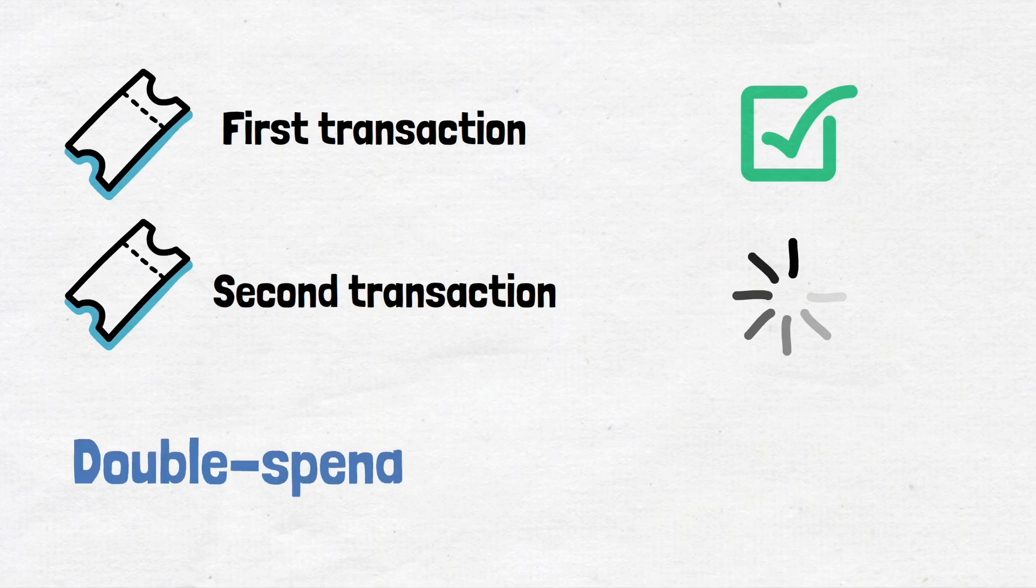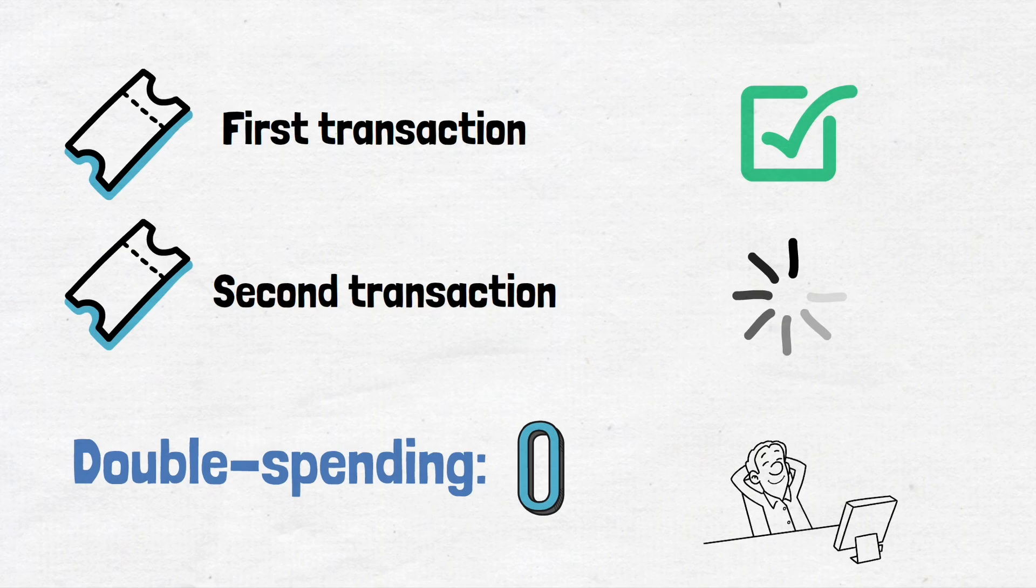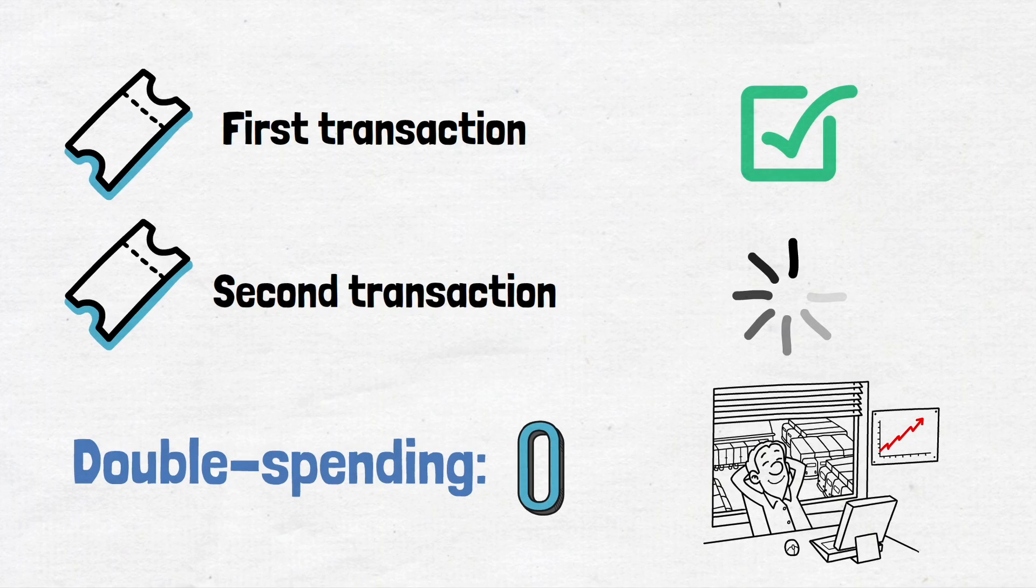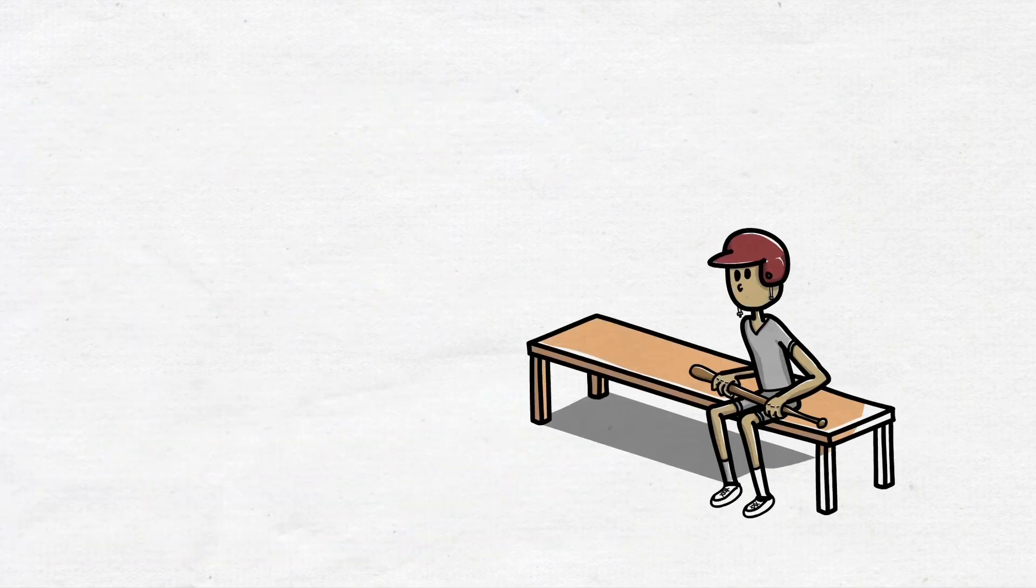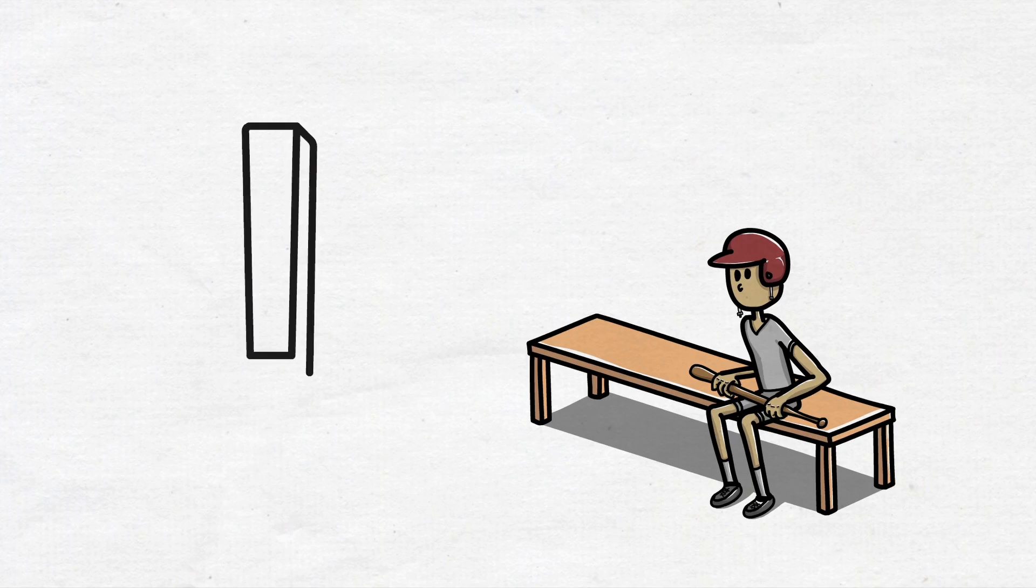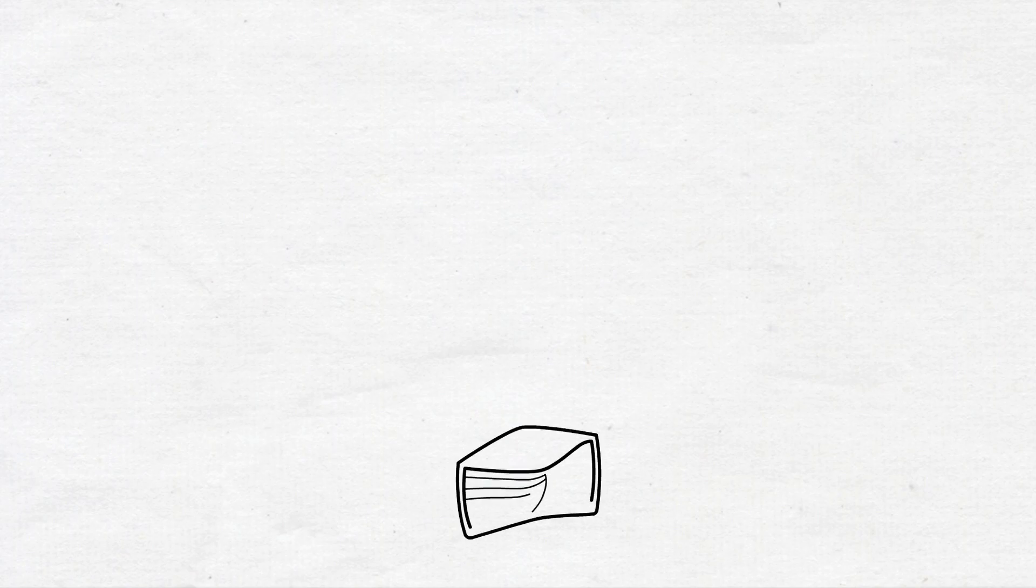As proof of how effective the solution is, there isn't any recorded instance of double spending since Bitcoin was introduced. The cryptocurrency community believes that all double spending has been thwarted. But hold on a second. Before we get carried away, let me clarify that double spending remains a risk. Although very improbable, it is not impossible. There are actually three types of attack that in theory could cause double spending.